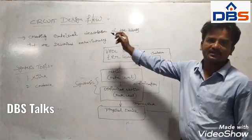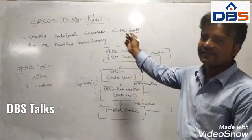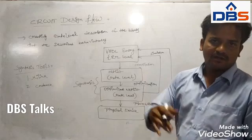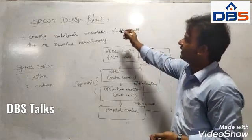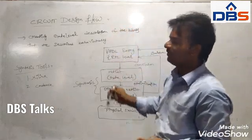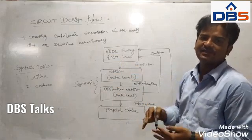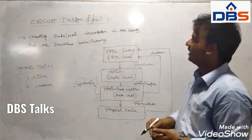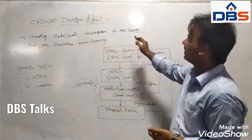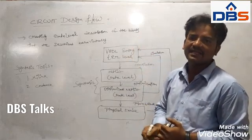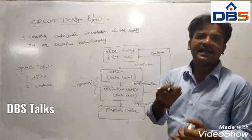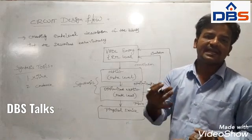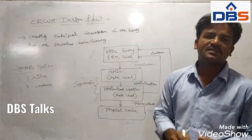We will continue to the next topic, that is circuit design flow. Already we have seen what synthesis is — how the optimized Boolean expression will be converted into a physical device. That is one part of circuit design flow. After synthesis, the gate level netlist will be produced within the IC integrated circuit. It is the process of creating a gate level distribution of blocks that are described behaviorally. For example, an OR gate performs addition and an AND gate performs multiplication.